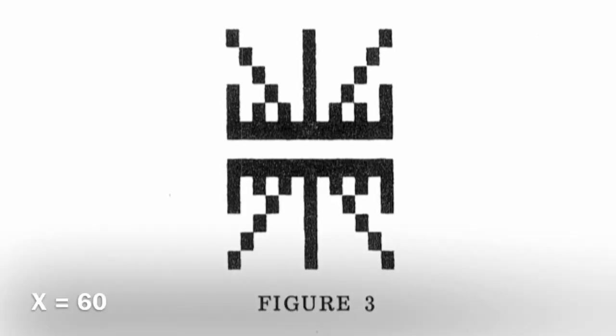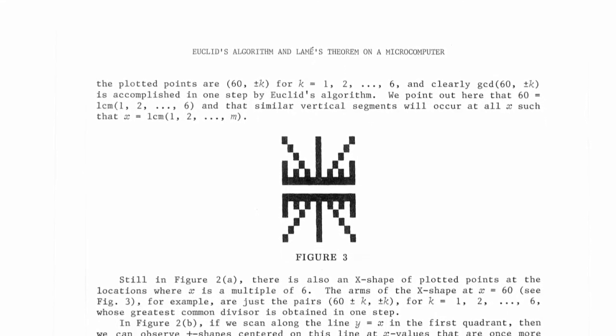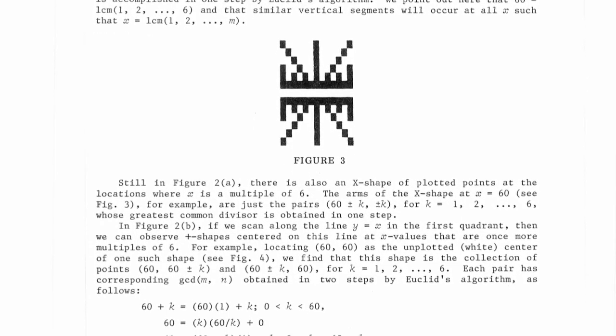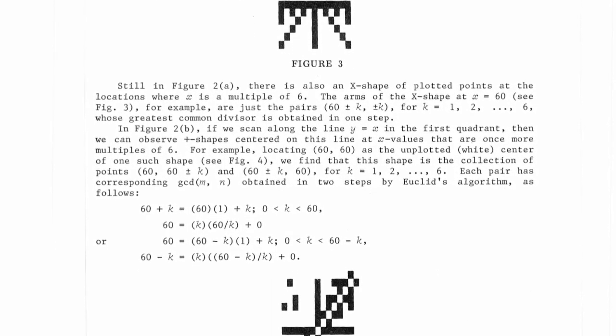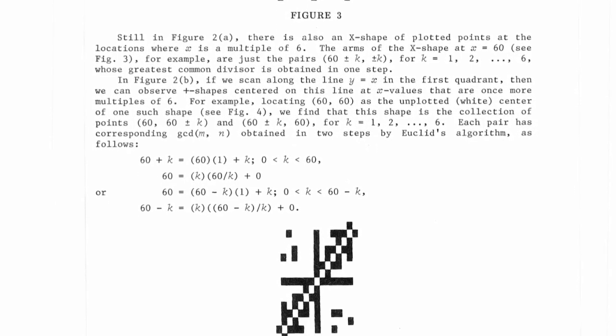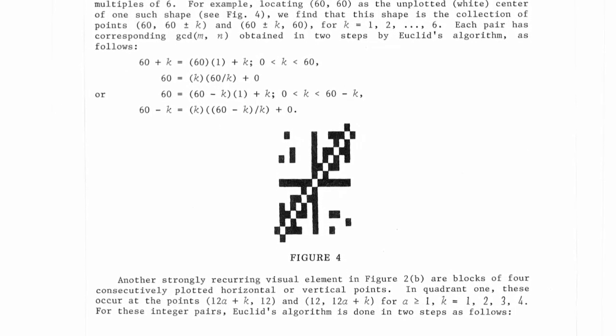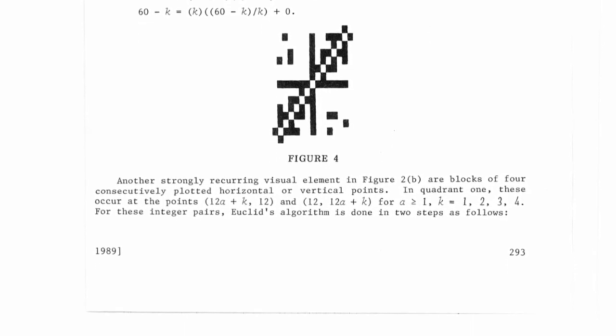The points on the vertical segments correspond to the points (60, plus or minus K) for K equals 1, 2, 3, 4, 5 and 6, for which DC, that is the number of division steps, is equal to 1. Note that 60 is the lowest common multiple of all the integers 1, 2, 3, 4, 5 and 6. And similar vertical segments occur at all X values such that X is the LCM of all the positive integers up to N. The X shape arises due to the points (60, plus or minus K, plus or minus K) for which GCD is obtained in one step. In a similar fashion, various patterns can be found in the other images too.